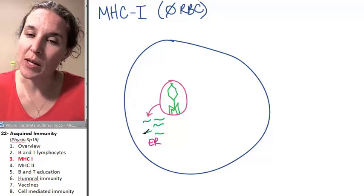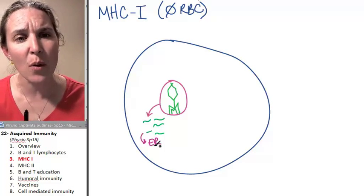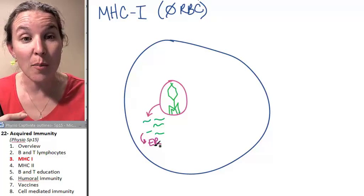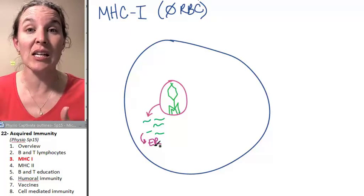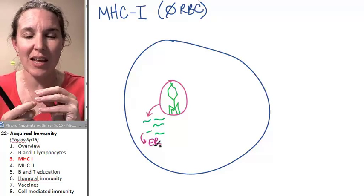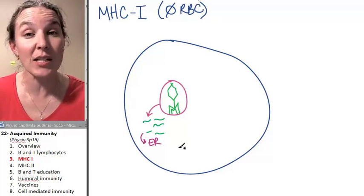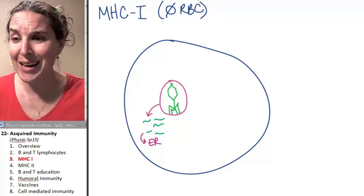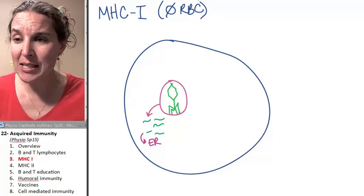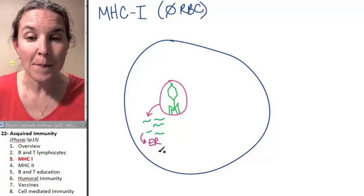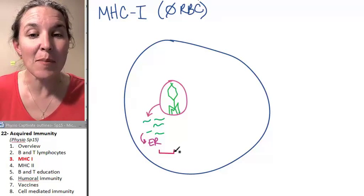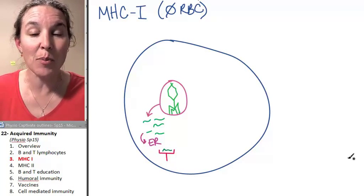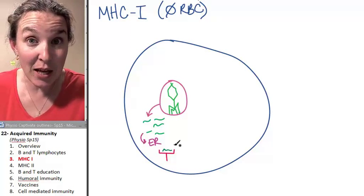They go to the endoplasmic reticulum. Now think — what is the endoplasmic reticulum? This is where proteins are processed. Proteins built in ribosomes can be folded and made into their proper shapes in the endoplasmic reticulum. So guess what happens with these virus parts? The endoplasmic reticulum takes that virus part and adds it to a little MHC platform that's being built right there inside the endoplasmic reticulum.